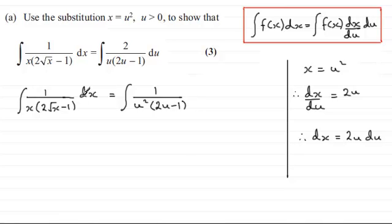For dx, I'll replace it with dx over du times du, which is 2u du. If you took the other approach, you'd just replace dx with 2u du directly. Either way, you get exactly the same result.